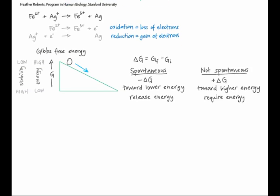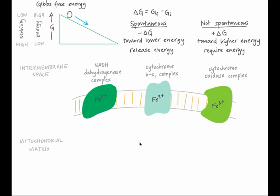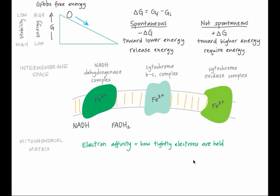How do both redox and thermodynamics apply to the electron transport chain? In the electron transport chain, electrons are passed from one place to the next. They start at NADH or FADH2, which are molecules that have a relatively low affinity for electrons.